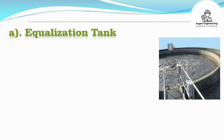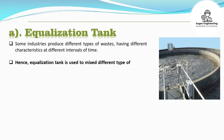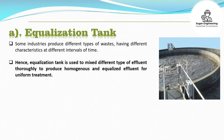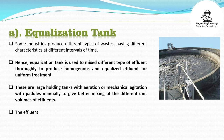Equalization Tank: Some industries produce different types of wastes having different characteristics at different intervals of time. Hence, the equalization tank is used to mix different types of effluent thoroughly to produce homogenous and equalized effluent for uniform treatment. These are large holding tanks with aeration or mechanical agitation with paddles to give better mixing of the different unit volumes of effluents. The effluent is held and mixed for a specified period of time.